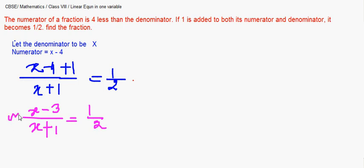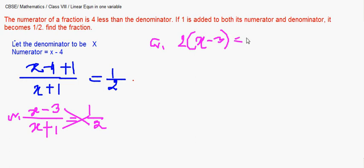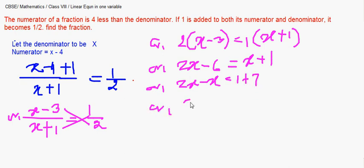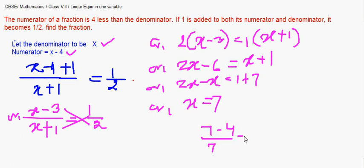We cross-multiply to get 2(x minus 3) equals 1(x plus 1). Removing the brackets gives 2x minus 6 equals x plus 1. Carrying x to the other side gives x equals 7. So the denominator is 7 and the numerator is 7 minus 4, which is 3. The fraction is 3 by 7.